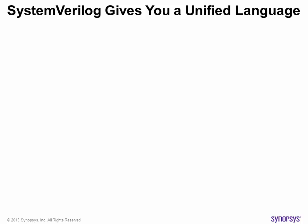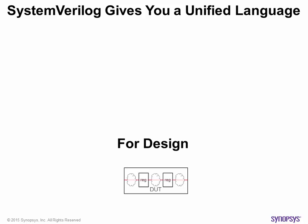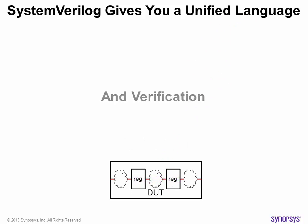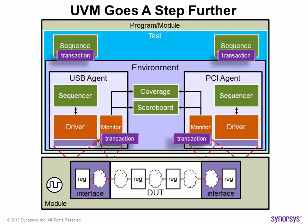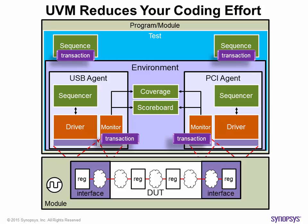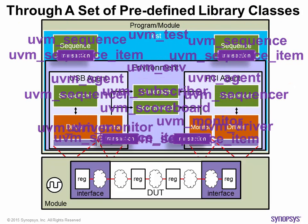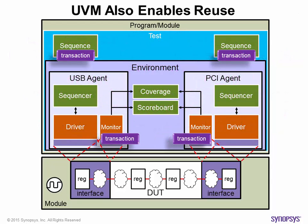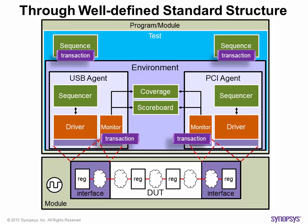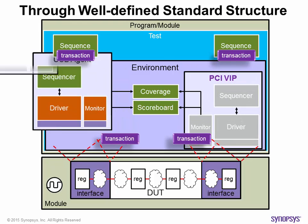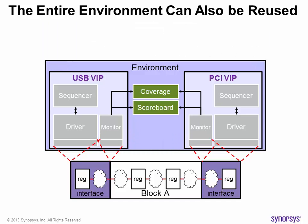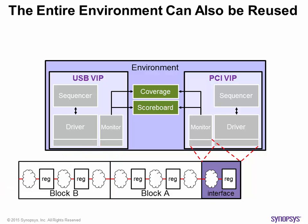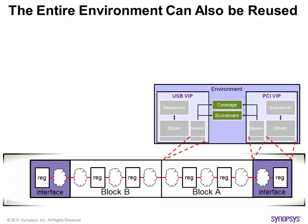When fully adopted, the System Verilog language gives you a unified language for design and verification. UVM goes a step further — it reduces your coding effort by providing a set of predefined library classes, and enables reuse through a well-defined standard structure, enabling a make-by-choice approach in creating a test bench. In fact, in UVM, the entire environment at the block level can be reused. If the verification was done at the block level, when integrated, the entire environment from the block level can be reused as part of an integrated higher-level environment.